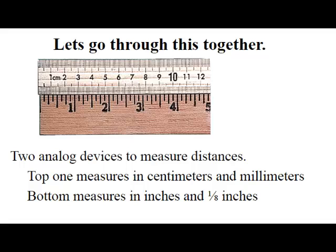So let's go through this together. I have two analog measuring devices here. They do the same thing, but one measures in centimeters and millimeters. This is called the metric way of measuring distances.